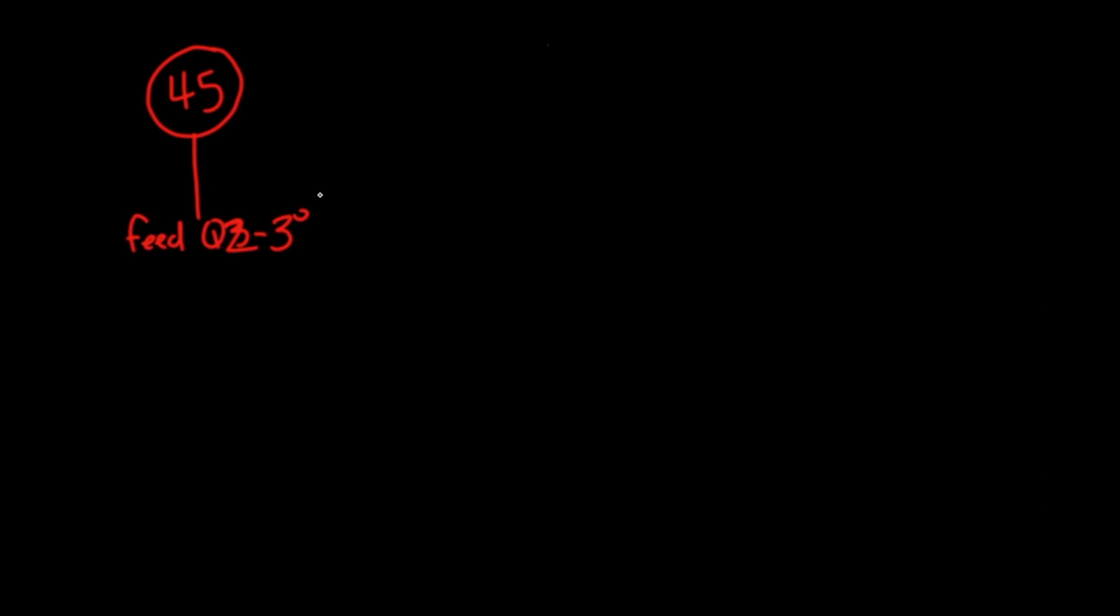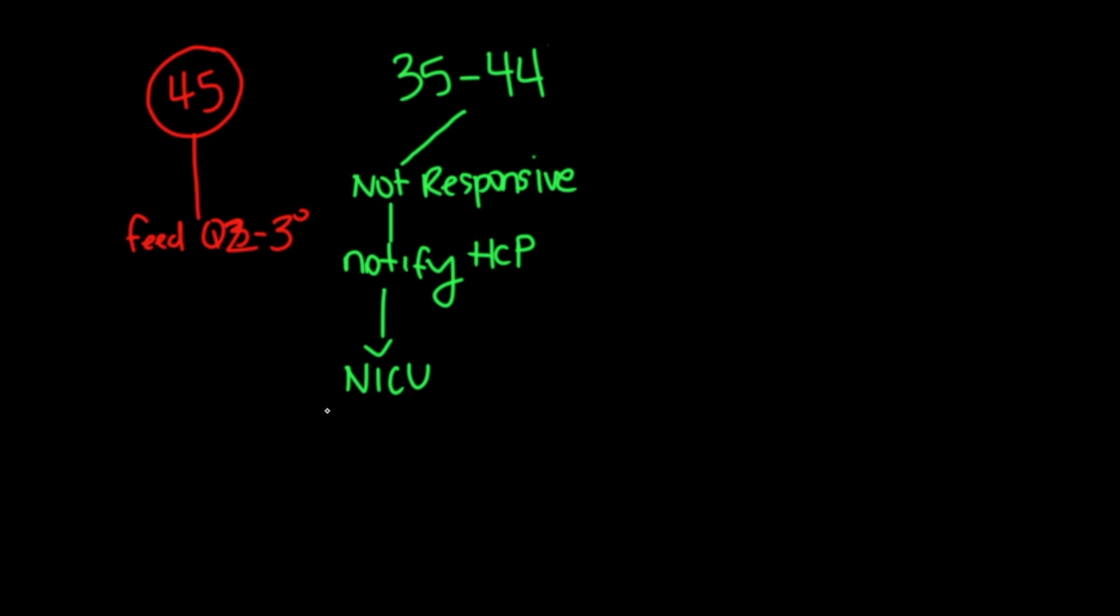Versus if you have a blood glucose and it is between 35 to 44, what are you going to do? So for the baby that is not responsive and they are on the regular OB floor, you're going to notify the healthcare provider, whether it's the MD or the nurse practitioner. And then most likely, this baby will be routed to NICU for IV dextrose medication.